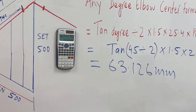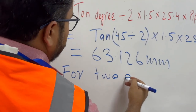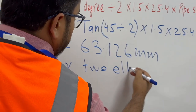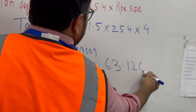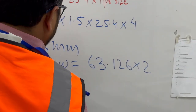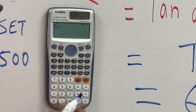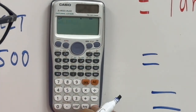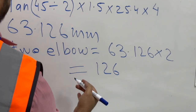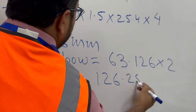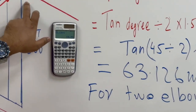We got 63.126 millimeters — this is our one elbow center. For 2 elbows, we multiply 63.126 by 2, and we get 126.256 millimeters for both elbows combined — one elbow here and one elbow here.